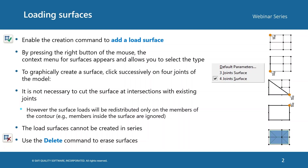Graphically, to create a loading surface, the user needs to click successively on 3 or 4 joints of the model. It is not necessary to cut the surface at an intersection with existing joints. However, the surface loads will be redistributed only on the members of the contour — the members inside the surface are ignored. Load surfaces cannot be created in a series using this command.